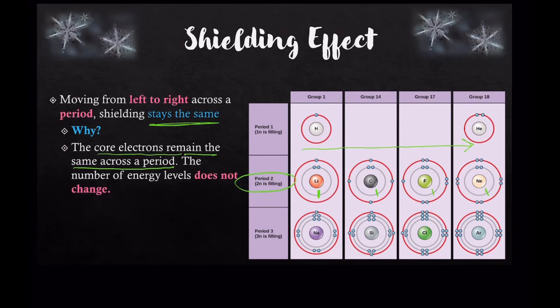So as long as the core electrons remain the same across a period, the shielding effect does not change. When you stay in the same period, the number of energy levels does not change for an element.